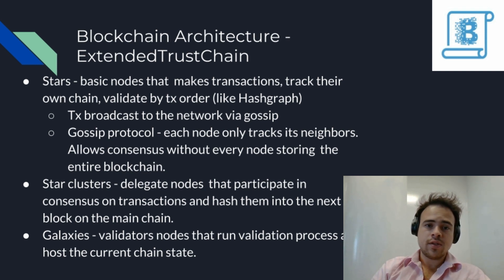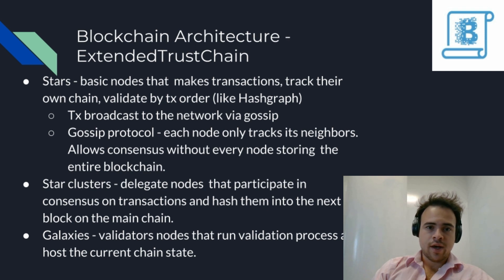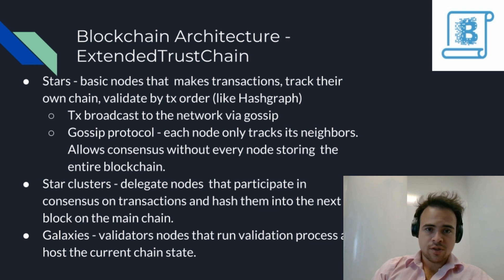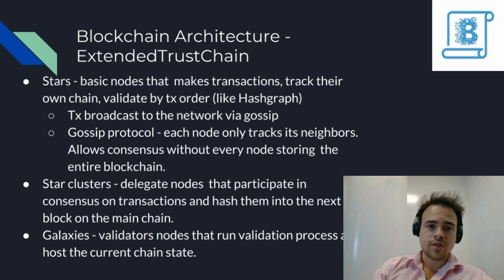This is how you can have consensus in a network where not every node has to have a full copy of the blockchain. Star clusters are the delegates that perform consensus on the transactions, hash them together, and add them to the chain. Galaxies are the validator nodes that run the validation processes on those transactions.